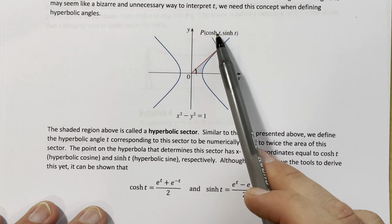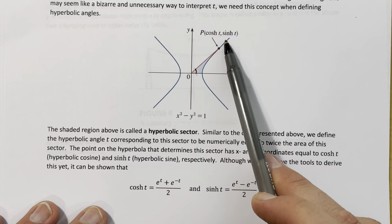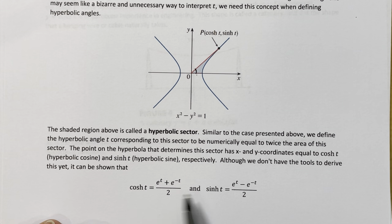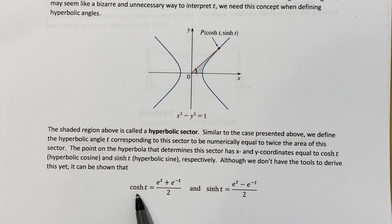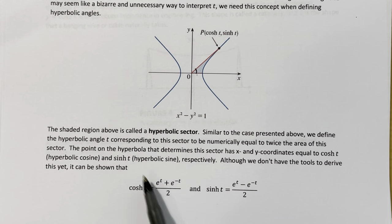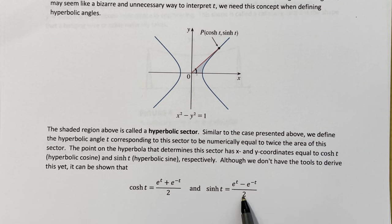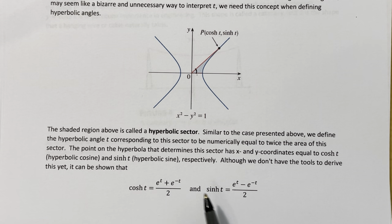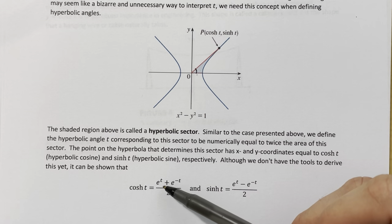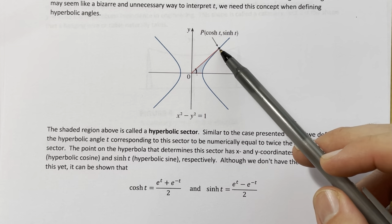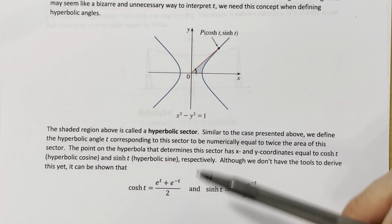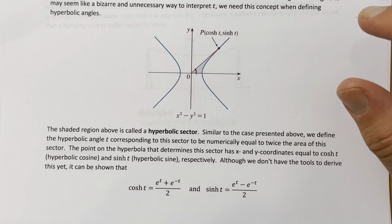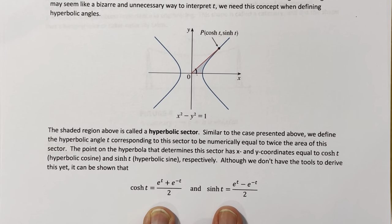Hyperbolic cosine and hyperbolic sine are written like cosine and sine but with an h after — we pronounce them cosh and sinh. It turns out cosh of t equals e to the t plus e to the negative t, all over 2. Sinh of t equals e to the t minus e to the negative t, all over 2. They look very similar — one has a plus, the other a minus. These functions are exactly equal to these exponential expressions, though showing the connection to the geometric definition requires Calculus 2.